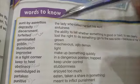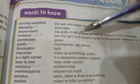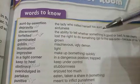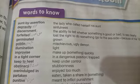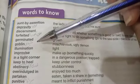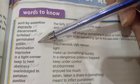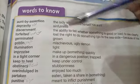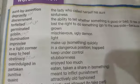Fourth word: 'forfeited' means lost the right to do something. Fifth word: 'germinating' means growing.